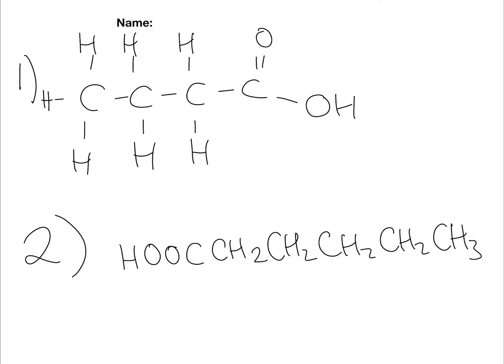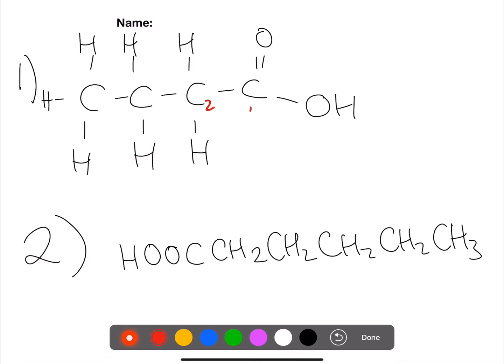So for this first one, we need to count the carbons. We have one, two, three, four. So four is always but. So we've got butan, we've got all single bonds, and oic acid for the functional group.